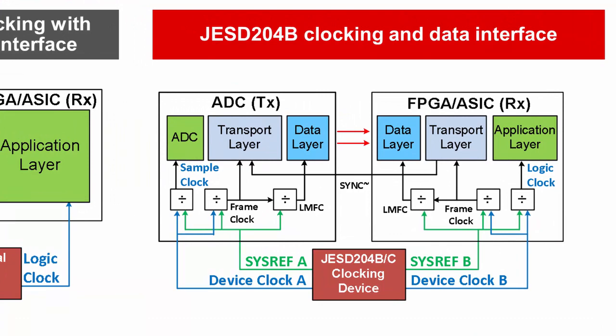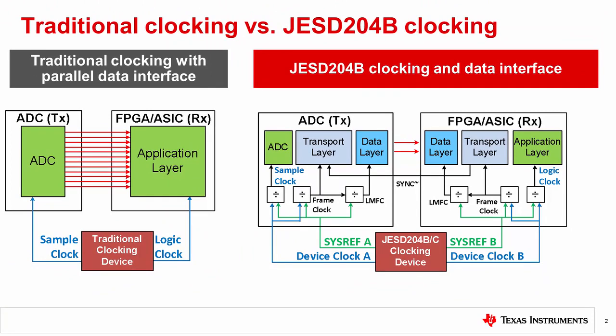The sample clock in JESD204B may actually be a divided-down frequency of the device clock. Other JESD204B clocks, such as the frame clock and the local multi-frame clock, are also derived from the device clock. The sysref informs the receiver to reset these dividers. When reset, the clocks will be deterministic to all other clocks in the system. When the JESD204B system has been deterministically synchronized, the user can then know the time between samples within the period of an LMFC.